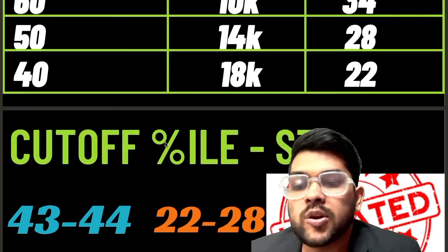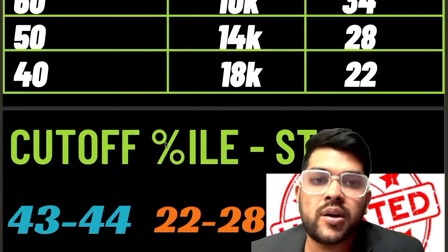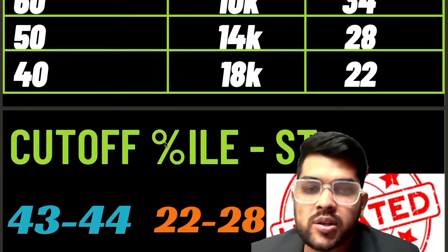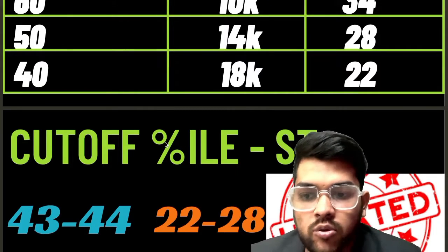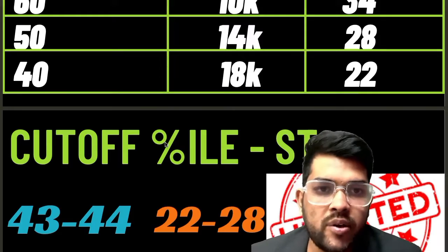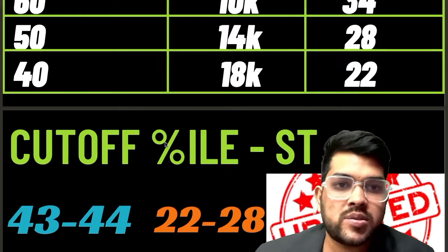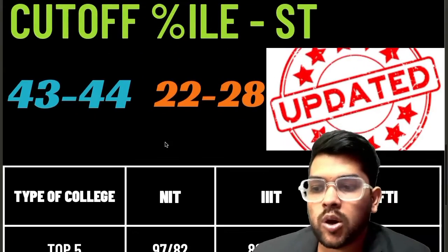The marks required for the minimum ST cutoff for JEE Advanced eligibility will be 22 to 28, depending on the paper. If the paper is easy, then 28 marks; if it is tough, then 22 marks; and if it is moderate, around 25 marks can be expected.